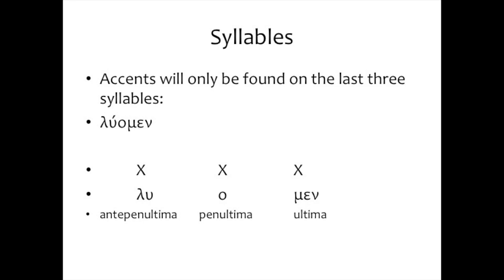If a Greek word has 17 syllables — and there are in fact some that go that long, usually made-up words in comic plays based on casseroles with all kinds of vegetables and fish — even if it has 17 syllables, the primary accent, the one that's marked in all Greek, can only be found in the last three syllables. There are probably secondary accents, but we don't know what they are and we don't mark them.